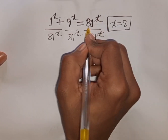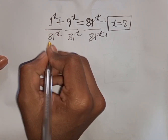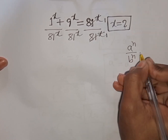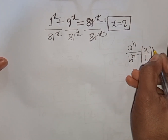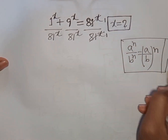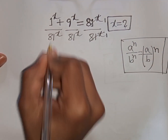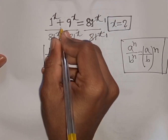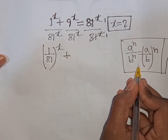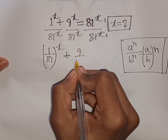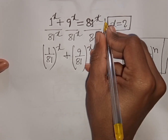This term will be cancelled, leaving 1 here and 1 here. Now we see these terms have the same power but different bases. According to the formula, a power n over b power n equals (a over b) to the common power n. So we apply this formula: (1 over 81) bracket power x plus (9 over 81) bracket power x equals 1.